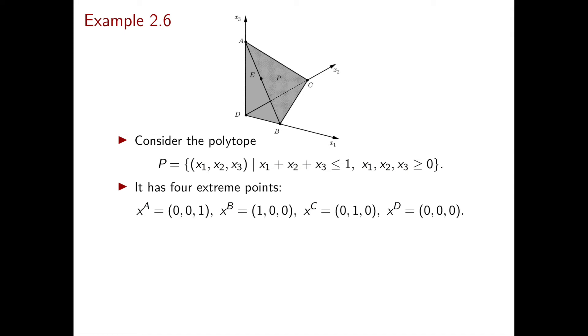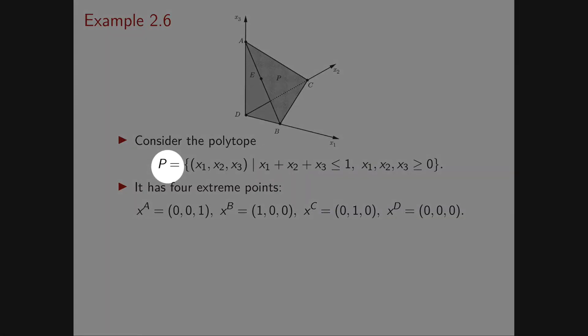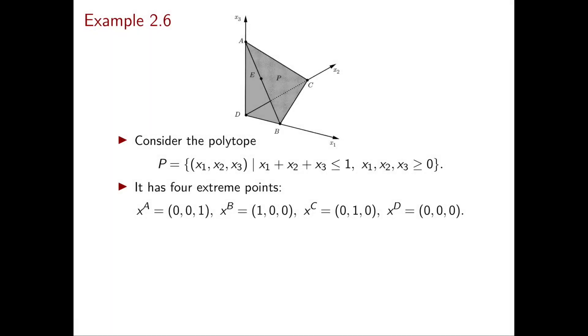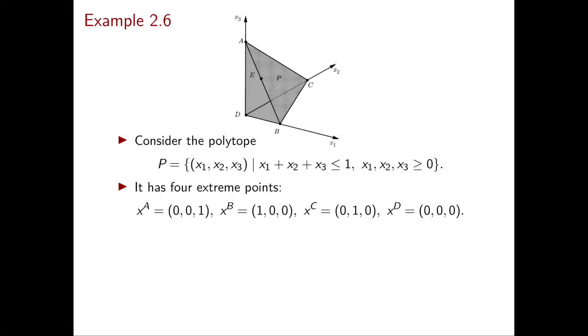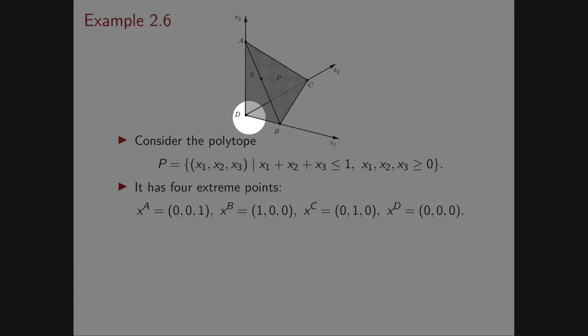Let's consider the polytope P in R³ described by non-negativity constraints and x₁ + x₂ + x₃ ≤ 1. This is the polytope highlighted in gray in the picture above, and it has four extreme points: the origin, the vector (1,0,0), (0,1,0), and (0,0,1).